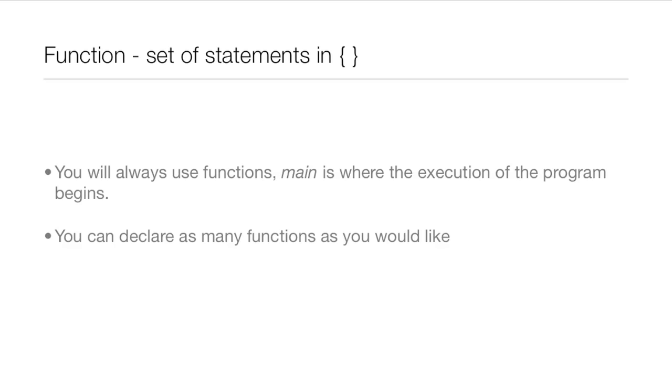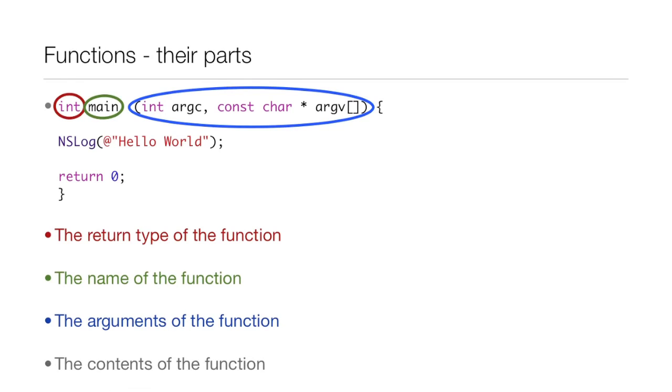Now what are the parts of a function? Well, the first part is the return type of the function, which can be something like int or double or void if you don't have a return type. Then you have the name of the function, the arguments of the function, and the contents of the function.